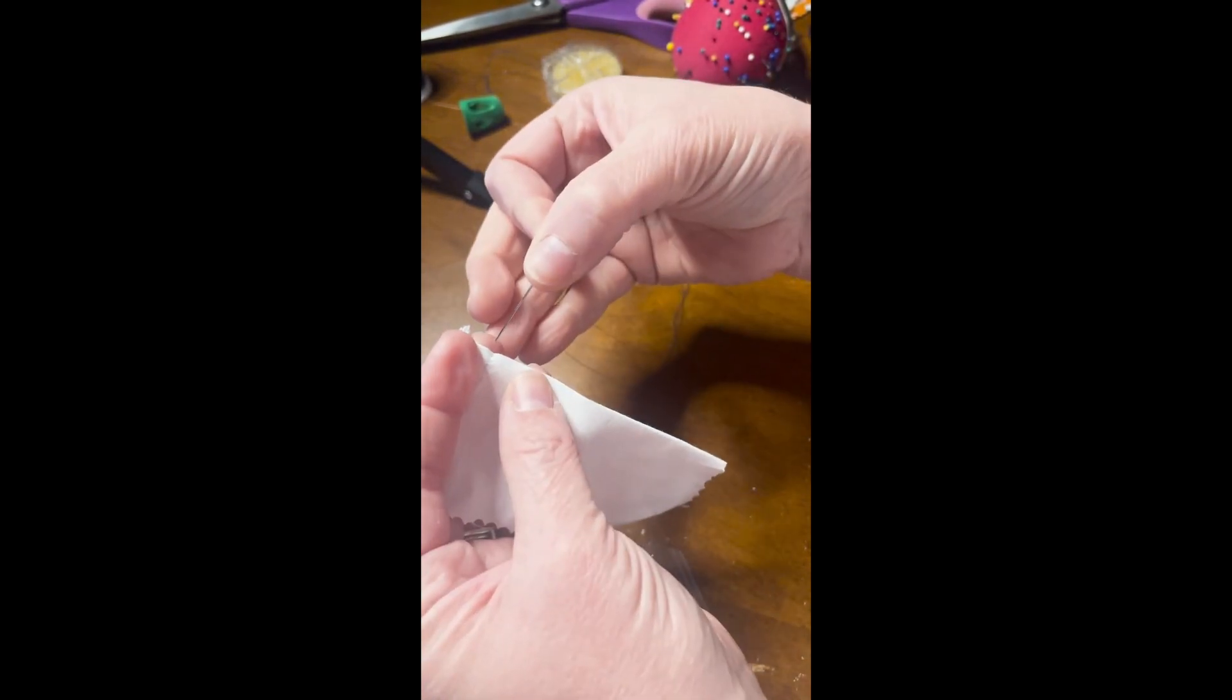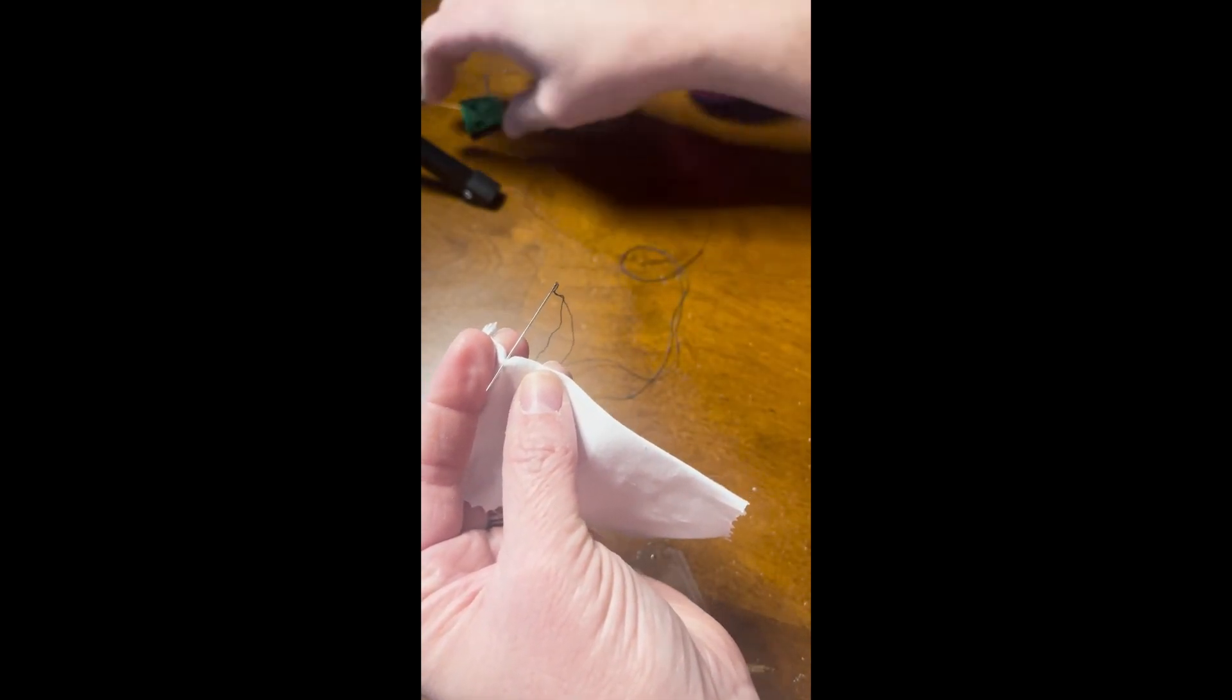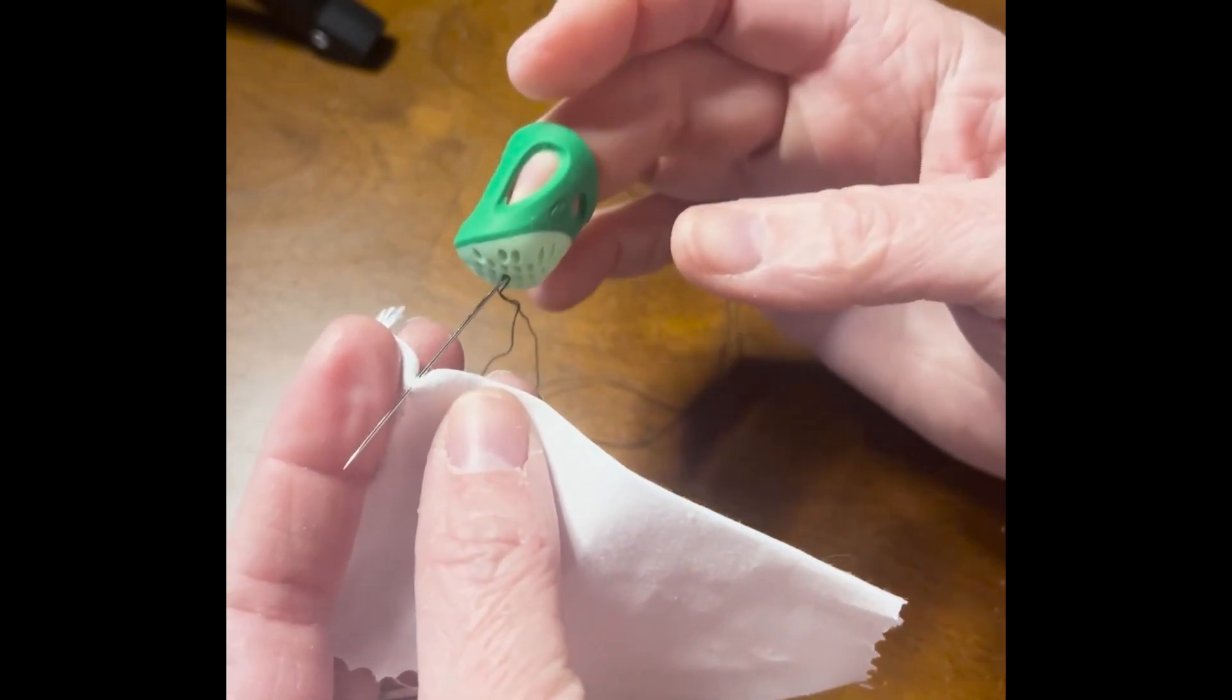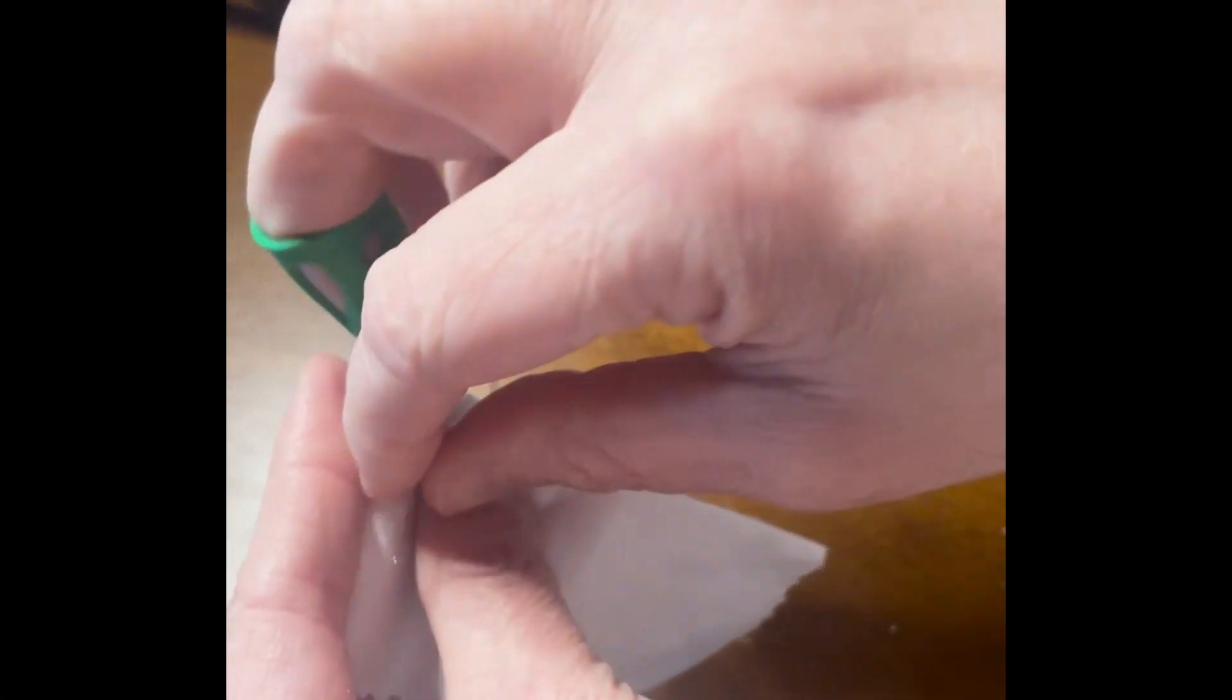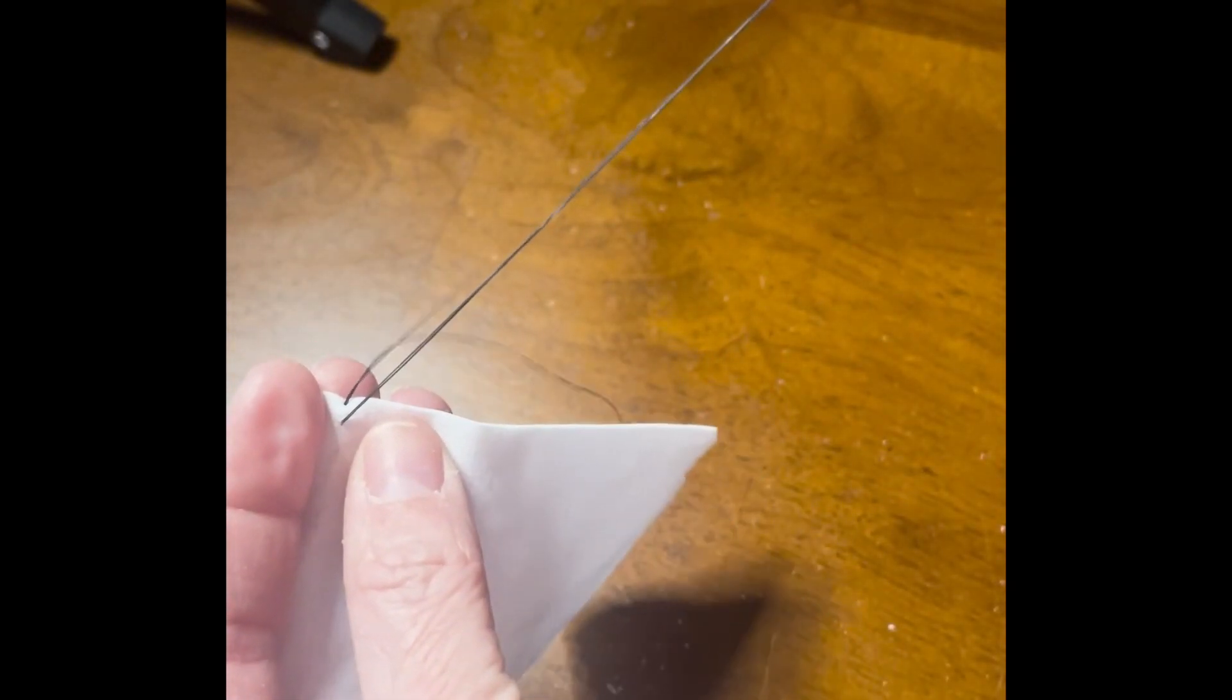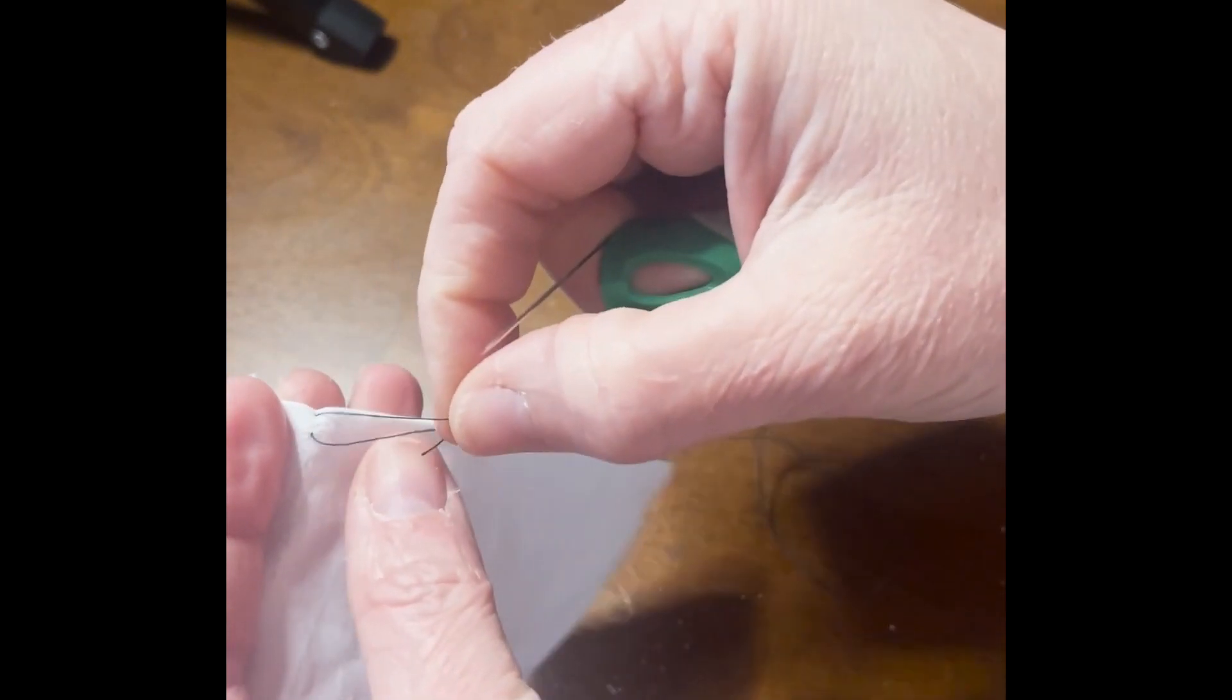So on the side that has the fold, you are going to take up about a quarter of an inch, which I should put my thimble on and set a good example. A quarter of an inch-ish and pull until you have about an inch for a tail.